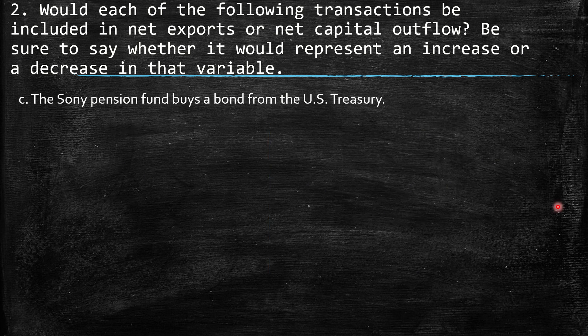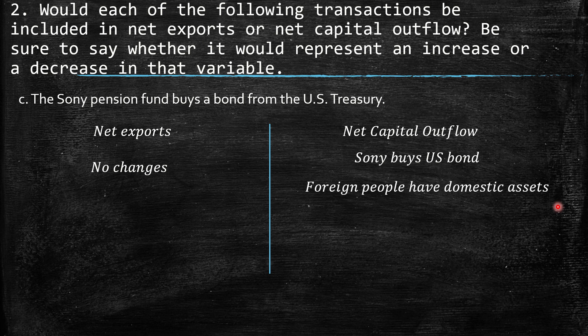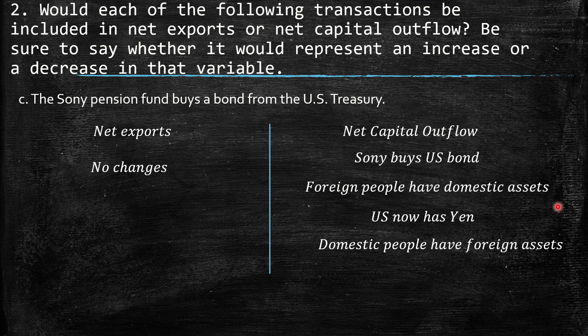C: The Sony pension fund buys a bond from the US Treasury. There are no changes in exports because we are not affecting the trade balance. For net capital outflow: Sony, the fund from Japan, buys a US bond, so foreign people have domestic assets — the US Treasury bond. But now the US has Yen, so domestic people have foreign assets. This nets to net capital outflow equal to zero and net export equal to zero.